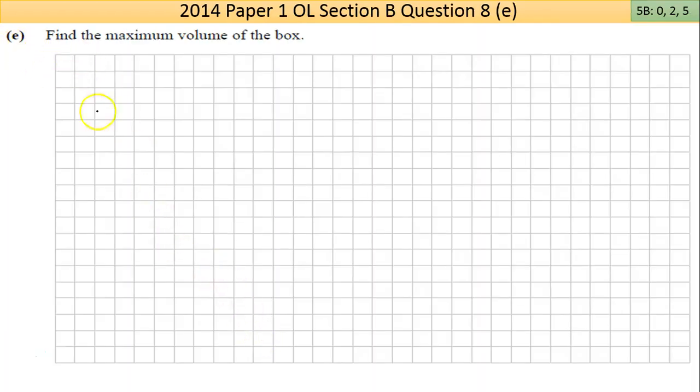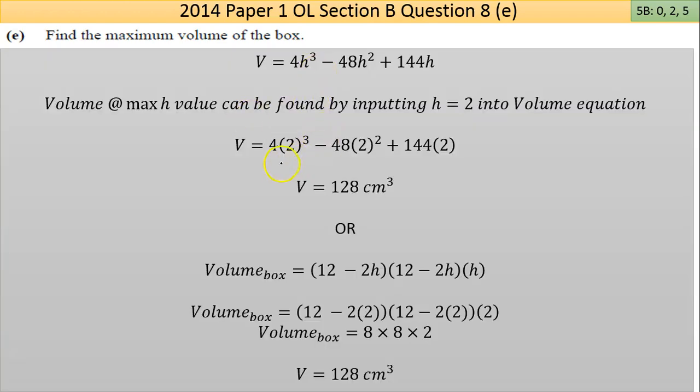Now Part E says find the maximum volume of the box. So I'm actually doing that stage here, putting the 2 in and finding the actual volume. What I did, or the alternative would be to actually use the original volume because it's length by breadth by height and swap the 2 in there. Either way it's equally valid. I hope that makes sense now.